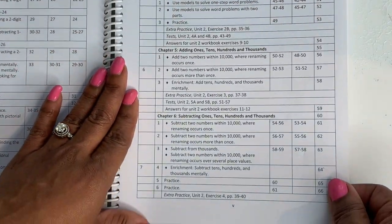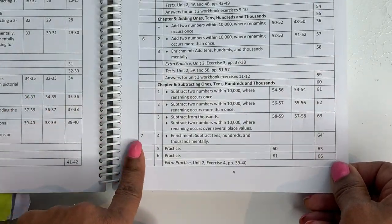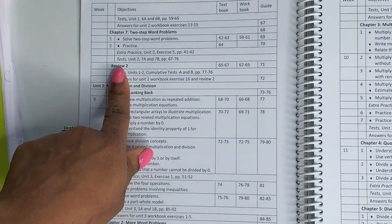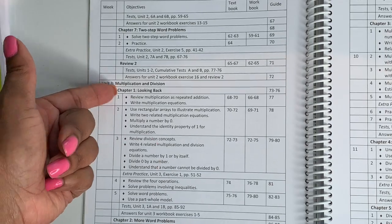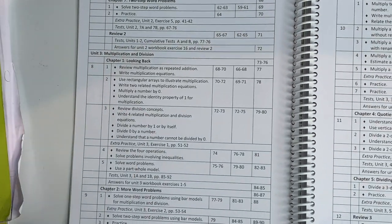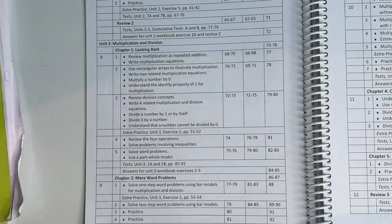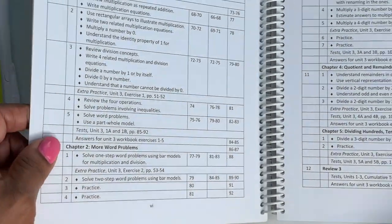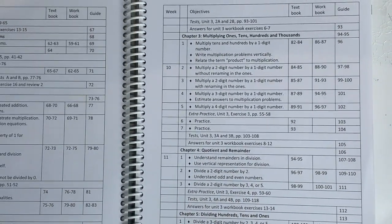And then you see the rest, subtracting ones, tens, et cetera. Week seven, we should be hitting that review pretty soon. Yes. And then you have the second review and then unit three, multiplication and division.